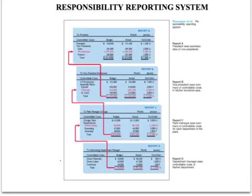Here we have a report at the departmental level. There's the budget and there's the actual — direct materials, direct labor, overhead. This is what they thought they would spend, this is exactly what they spent, and this is the variance. U is unfavorable, F is favorable.